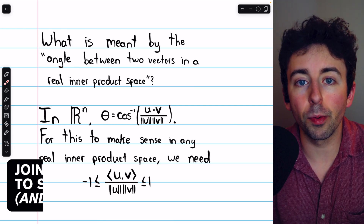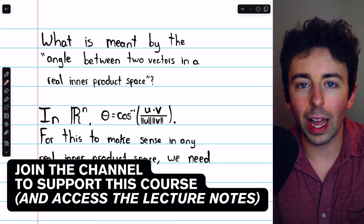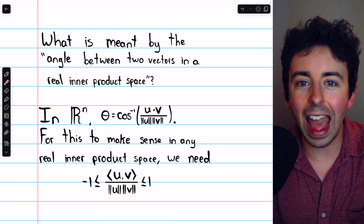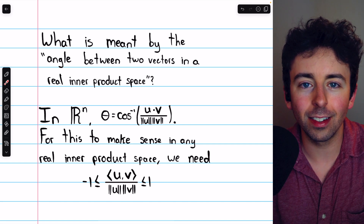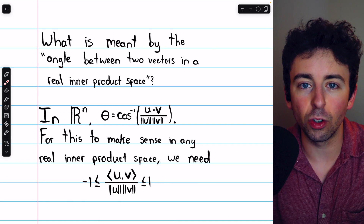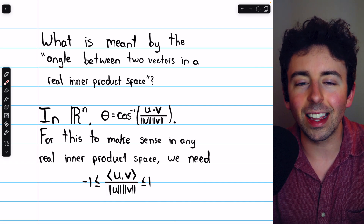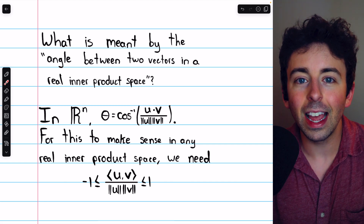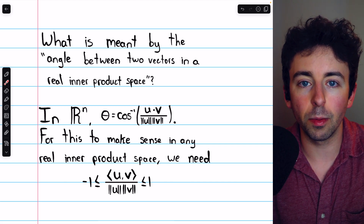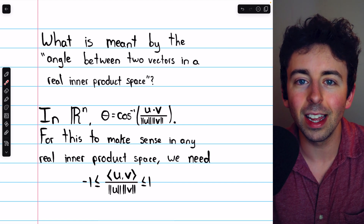When we introduced inner products and inner product spaces, we talked about how this gives us a way to understand what the angle between vectors is in any inner product space, and so we can give meaning to angles in some surprising places. In this video, we'll see exactly how that is done — how we define the angle between vectors in a general inner product space, and what it means for two vectors to be orthogonal. We'll also see some examples.